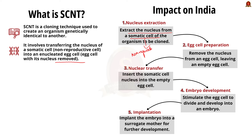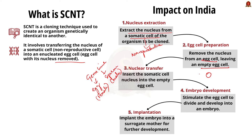Somatic cells are non-reproductive cells of an organism. The opposite of somatic cells are germline cells — the sex cells, that is the egg from the female and sperm from the male. All other body cells that are not reproductive in nature are called somatic cells. After extracting the nucleus from a somatic cell, the nucleus of an egg cell is removed leaving an empty egg cell. The somatic cell nucleus is inserted into this empty egg cell and allowed to develop into an embryo, which is then implanted into a surrogate mother to grow into a clone of the original organism.